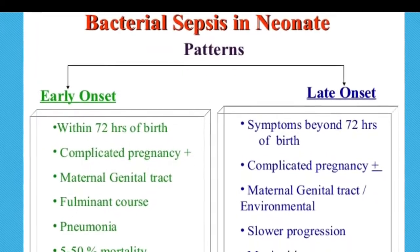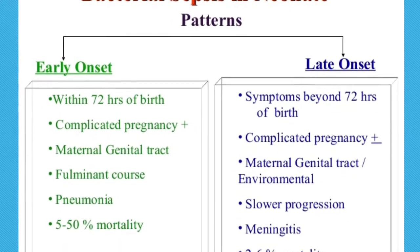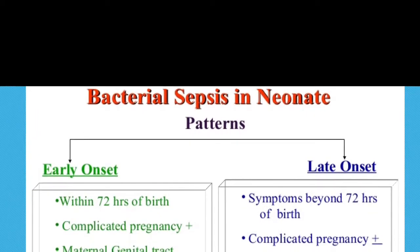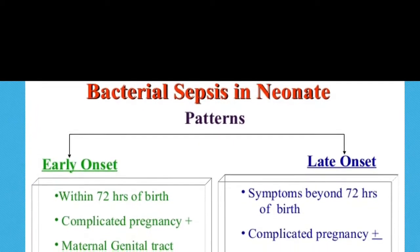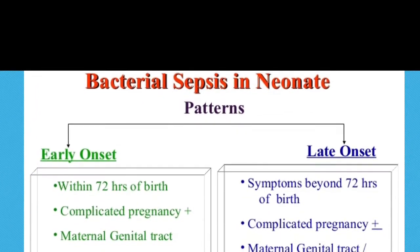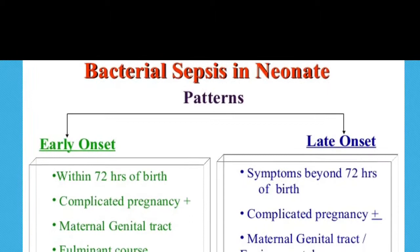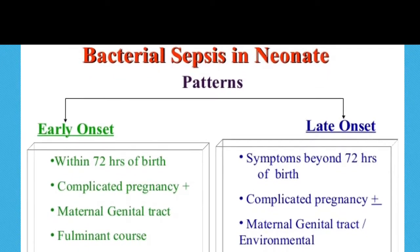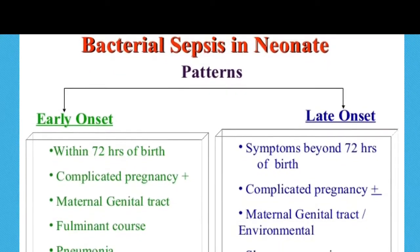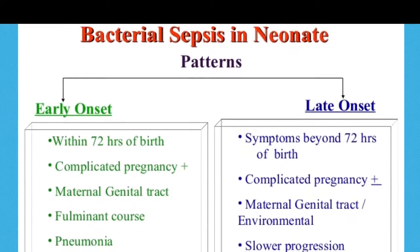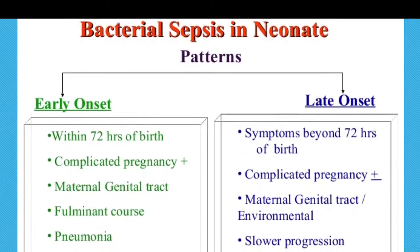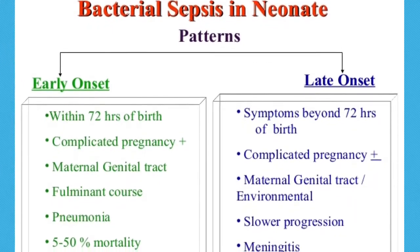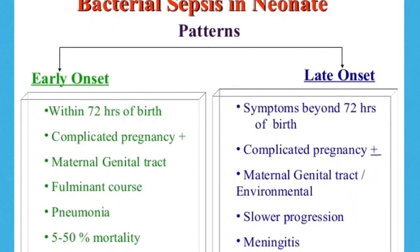Late onset — again, certain literature will say it presents after 48 hours of delivery, and other literature will say 72 hours post delivery. What you need to understand about late onset is that it has a slower progression, is usually associated with meningitis, and has a three to six percent mortality rate.